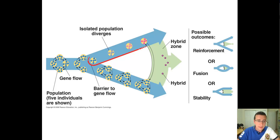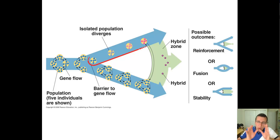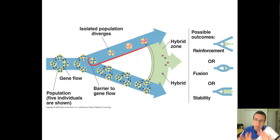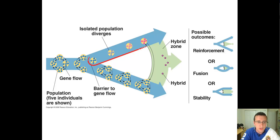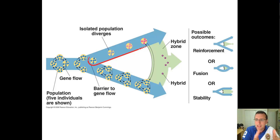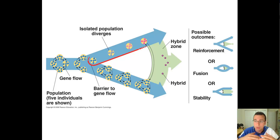Once a barrier is in place and that stops the gene flow — it could be a physical barrier, a temporal barrier, a behavioral barrier, an ecological barrier, a genetic barrier — when a barrier is actually in place, then the process of speciation will take place. It could be allopatric, sympatric, whatever we talked about. Maybe a mountain range separates them, or a chromosomal abnormality makes that population incapable of reproducing with the one below.